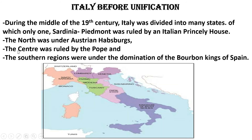Now let's talk about the center. The center was ruled by the Pope. On the map you can see the light-pink color region. This central power was ruled by the Pope.